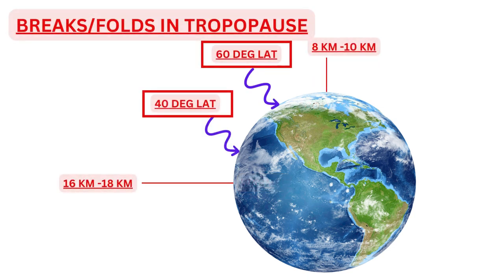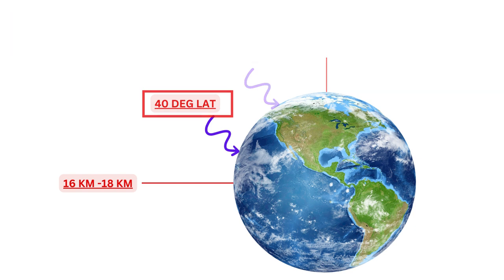There are two locations where tropopause abruptly changes height, called breaks or folds — first at 40 degrees latitude and second at 60 degrees latitude. Most weather phenomena like clouding, jet streams and clear air turbulence occur below the tropopause, making this layer the most important to study from the perspective of aviation.